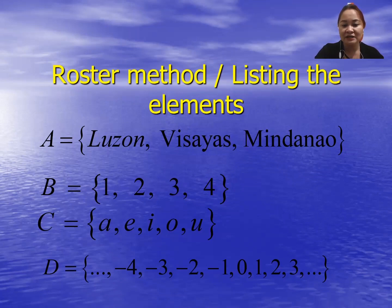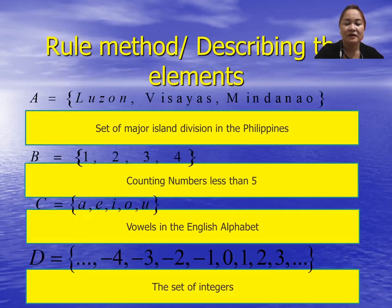And D is the set of integers from negative 4, negative 3, to 0, to positive infinity. So these are the set of integers. Next, we have the rule method, or describing the elements. Instead of listing the elements as in the roster method, we are going to describe them in sentence form.